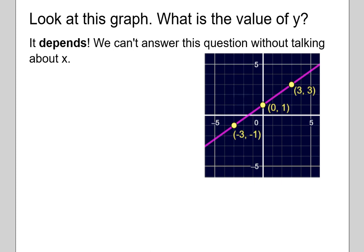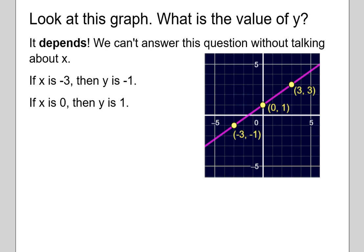You can say things like: if X is negative 3, then Y is negative 1 — that would be this point right here. If X is 0, then Y is positive 1. If X is 3, then Y is 3. So you can always talk about the value of Y, but not until you have an X value — or vice versa.